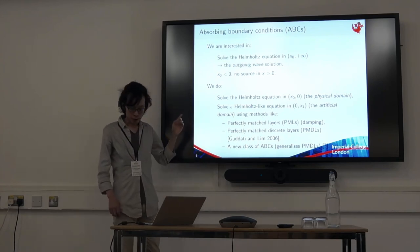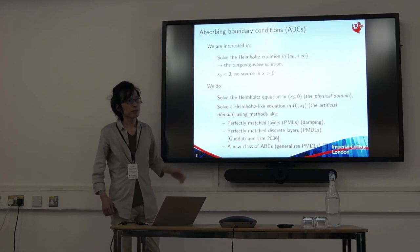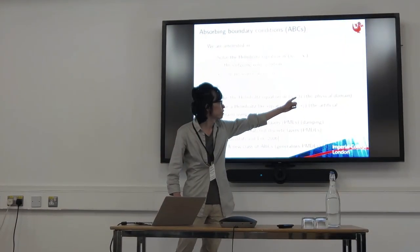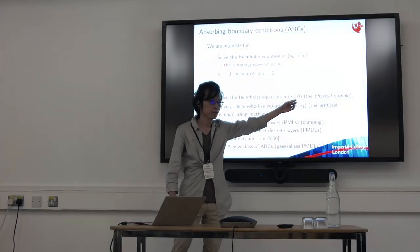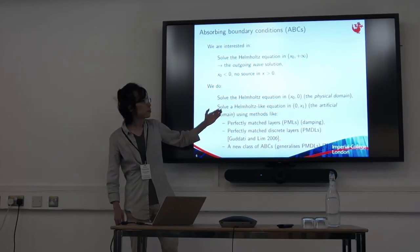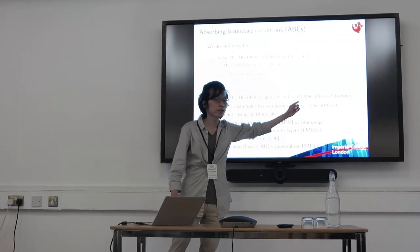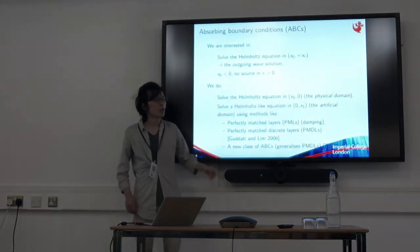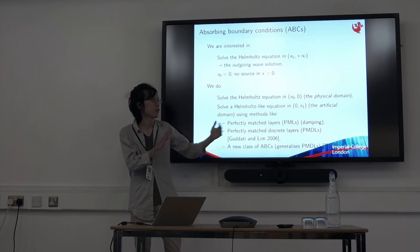The standard numerical method like finite element method requires a finite computational domain. So what we do is we truncate the domain somewhere. In this case, we truncate the domain at x equal to zero. And we solve the standard Helmholtz equation in this smaller domain, which we call the physical domain. And then we solve a Helmholtz-like equation in this small domain attached to the physical domain. And we call this the artificial domain, hoping that this will represent the original unboundedness.